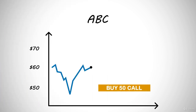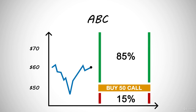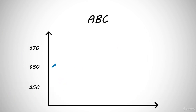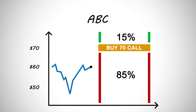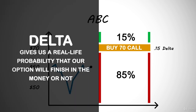If we were to buy a 50 strike price call in ABC with the stock trading at $60, this has a much better chance of finishing in the money. The stock would have to drop $10 to finish out of the money, so this would have a high delta. This call could have a delta of 0.85 because it has an 85% chance of finishing in the money. If we were to buy a 70 strike price call, the stock would have to increase in value $10 to finish in the money — the probability of that happening is much less, so this option might have a delta of only 0.15. Delta is important as it gives us a real-life probability that our option will finish in the money, and from this we can make strategic plays.